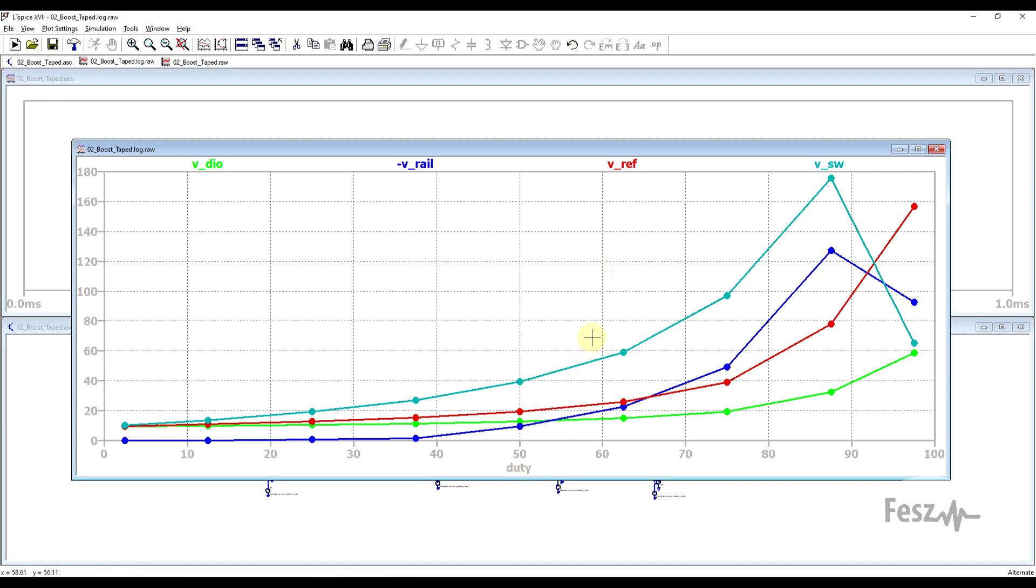And we can observe that switch tapping pushes our graph higher, so for the same duty cycle we're getting larger voltages. Diode tapping in green pushes the graph lower, we're getting smaller voltages for the same duty cycle. And rail tapping does a bit of both, so up to a point it will provide smaller voltages, and above that point it will provide higher voltages. But of course, inverted.